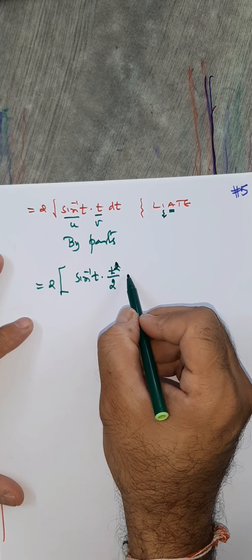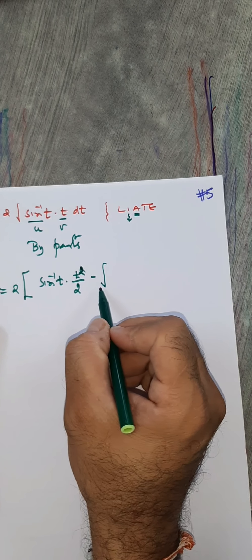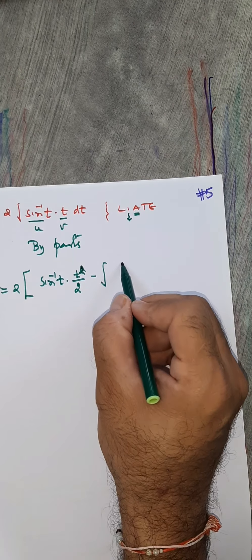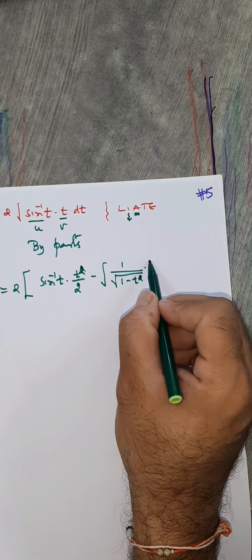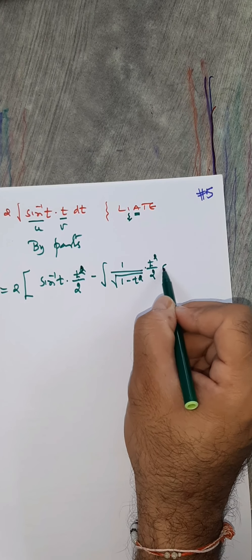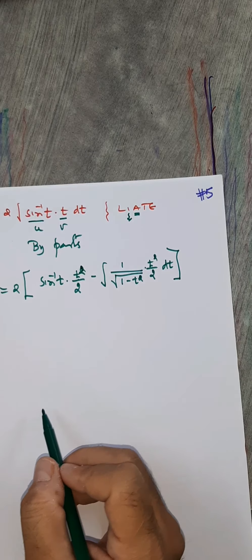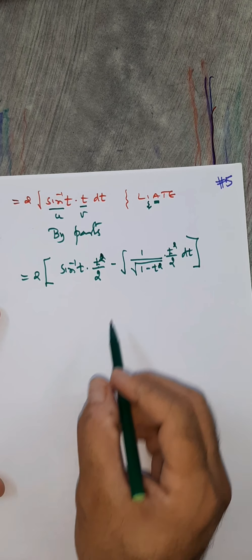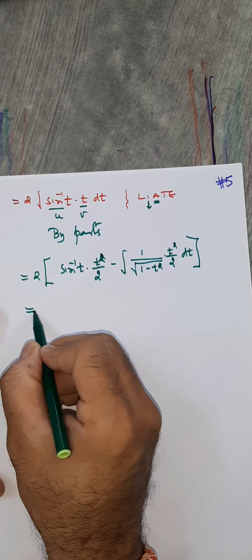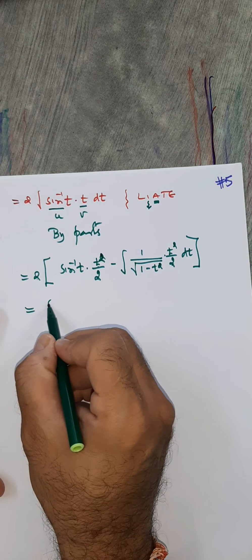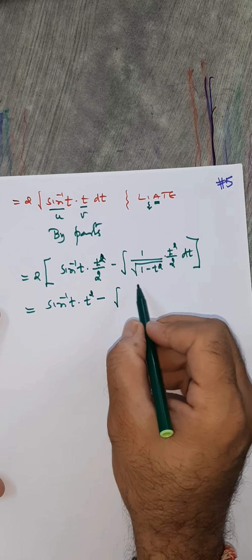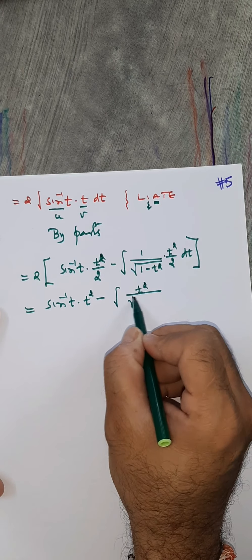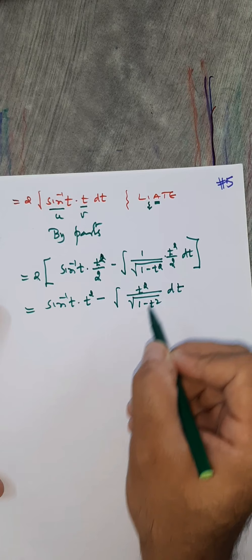Applying integration by parts: 2 times [sin⁻¹t · (t²/2) minus integral of (1/√(1−t²)) · (t²/2) dt]. The 2 and 2 cancel, giving sin⁻¹t · t² minus integral of t² upon root(1−t²) dt. Now we need to evaluate the remaining integral of t² / √(1−t²).